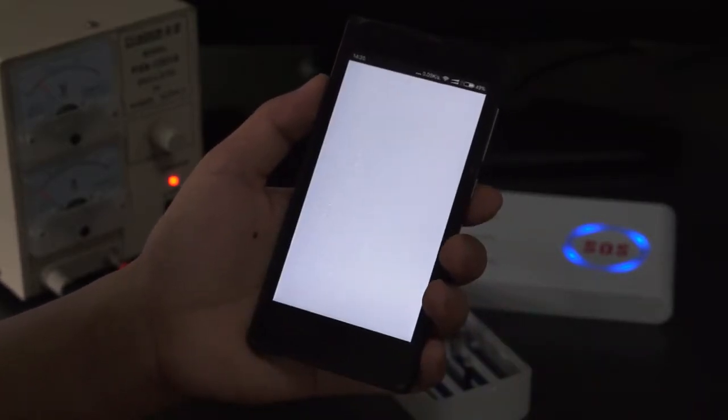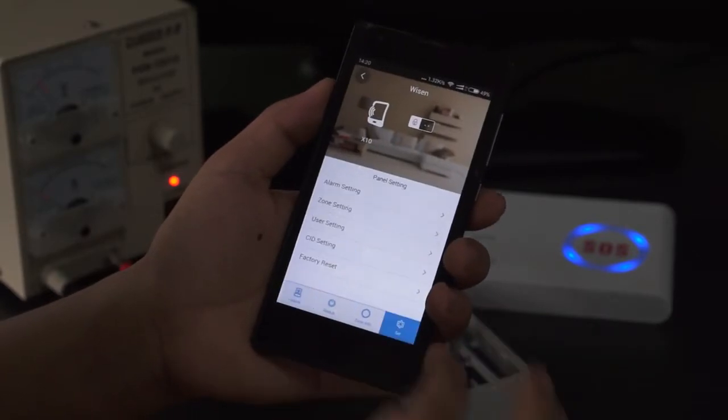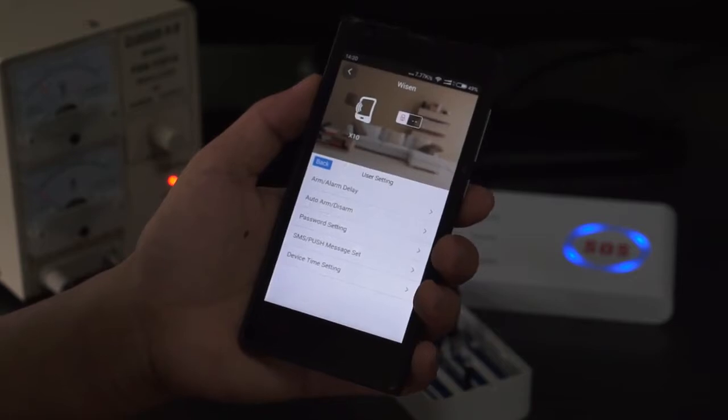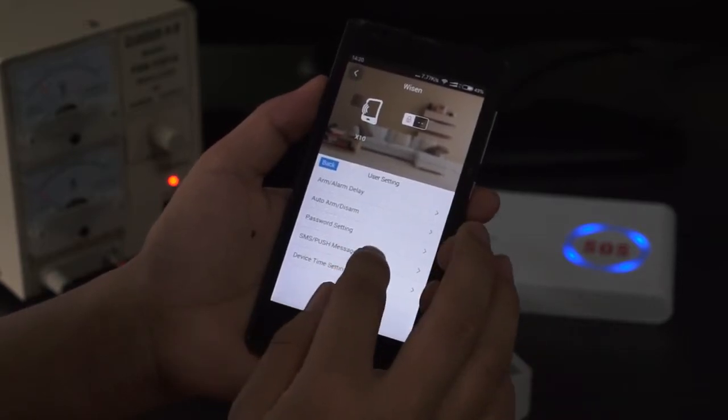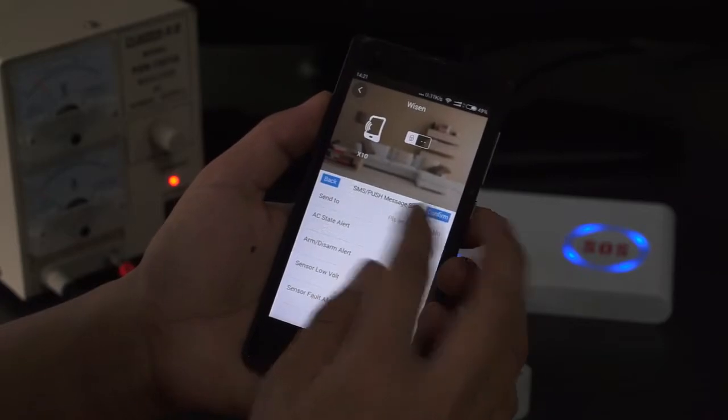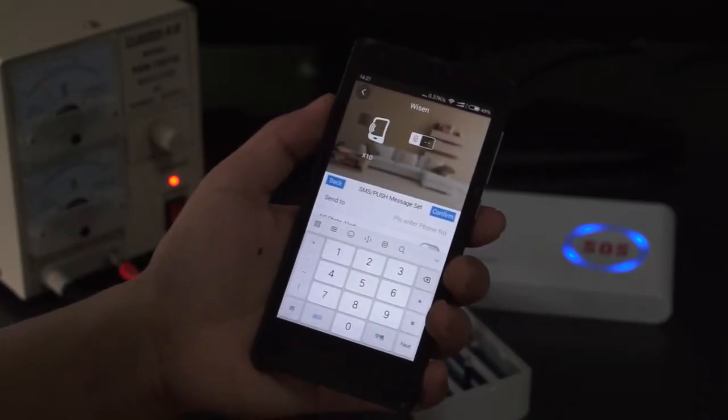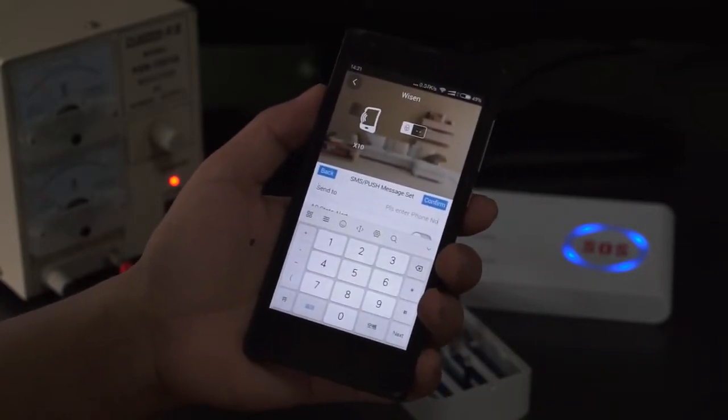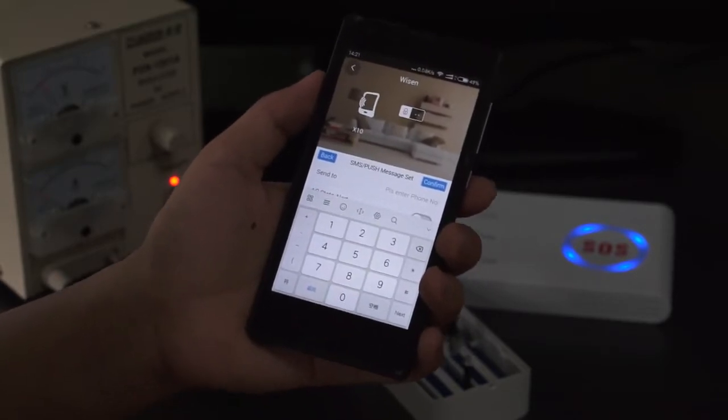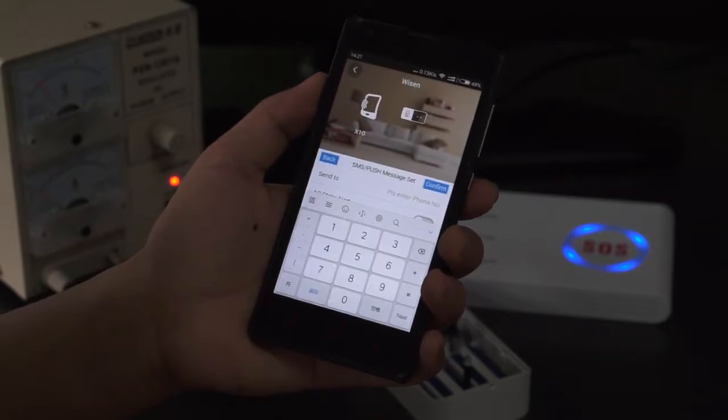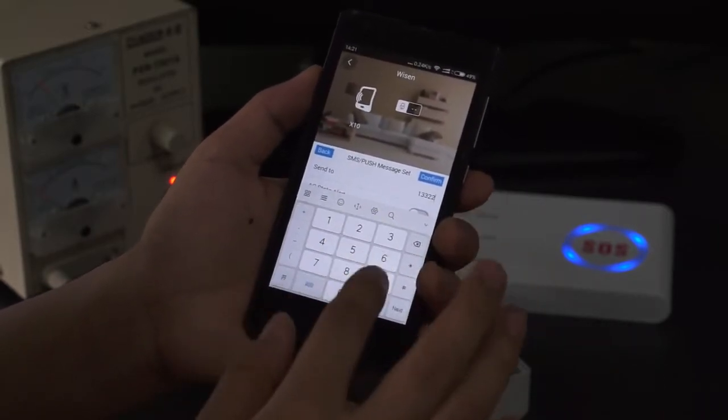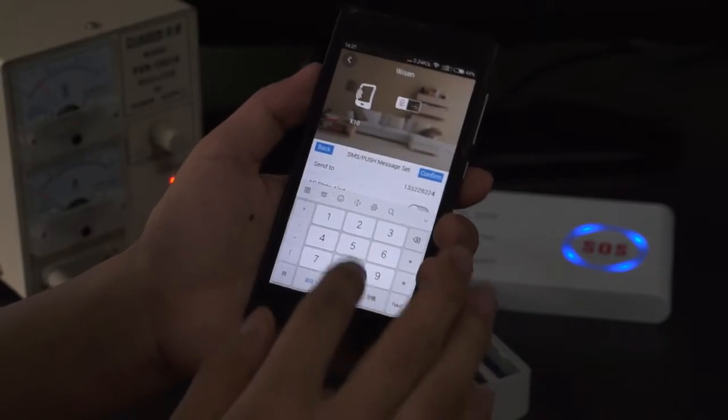Run the app. Go to set. Choose user setting. Then navigate to SMS push message set. In this column, we need to fill the phone number which needs to receive the event report. So we enter 1-3-3-3-2-2-9-2-2-4-5-0.